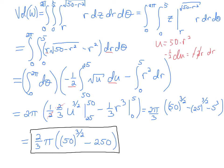And then I have the square root of u. And then if r is 0, then u is 50. And if r is 5, then u is 25. And that's how we get these limits of integration here.